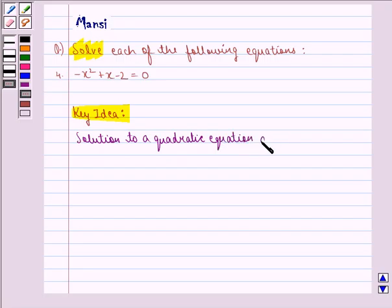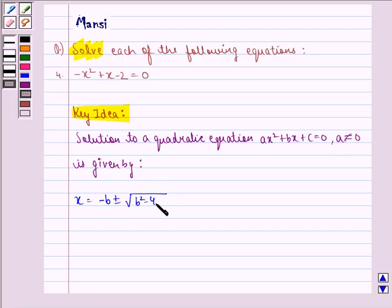ax² + bx + c = 0, where a ≠ 0, is given by x = (-b ± √(b² - 4ac)) / 2a.